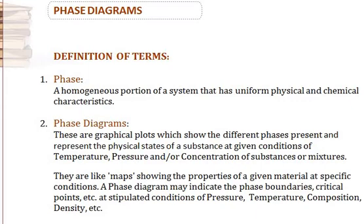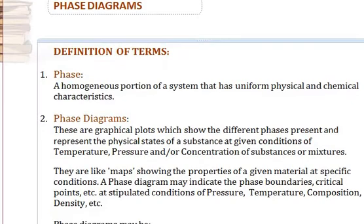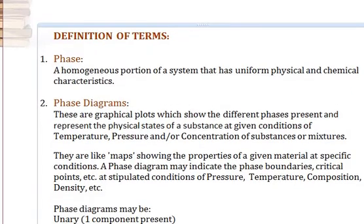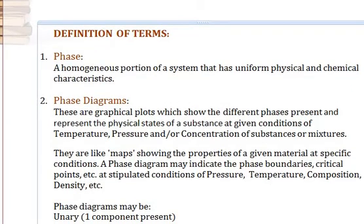These are all done at stipulated conditions of pressure, temperature, composition, density, and others. Phase diagrams can exist in unary forms, where there's only one component present. A common example is the phase diagram of water — water is just one component, it's just that it exists in different phases.